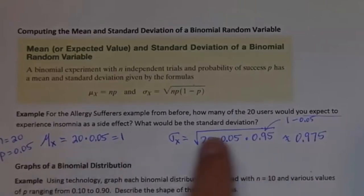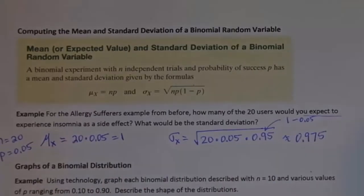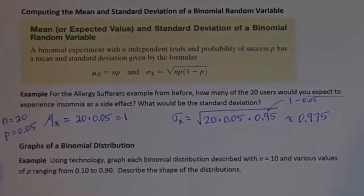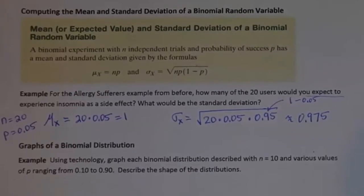This is just a shortcut for binomial distributions to find the mean and standard deviation, without going through the more complex formula from Chapter 5. The last topic in this section is graphs of binomial distributions. To discuss this, I'll go into StatCrunch and use the binomial calculator there.